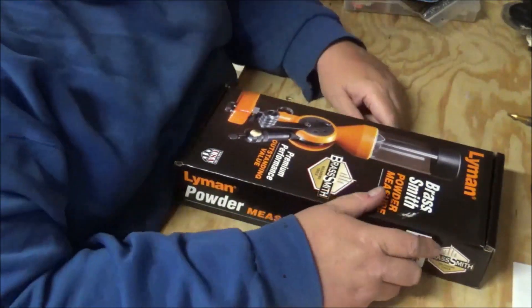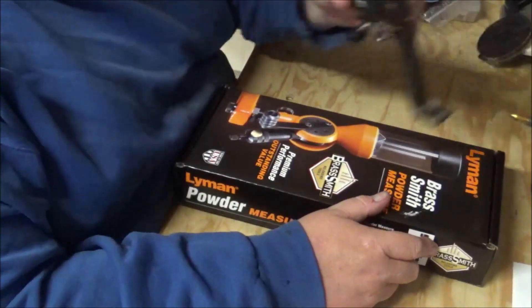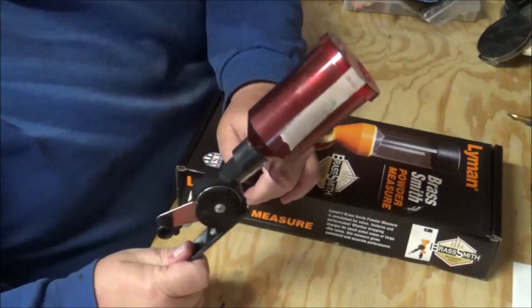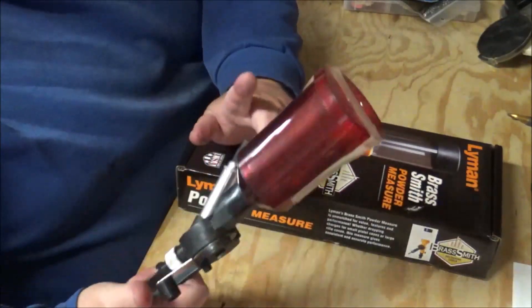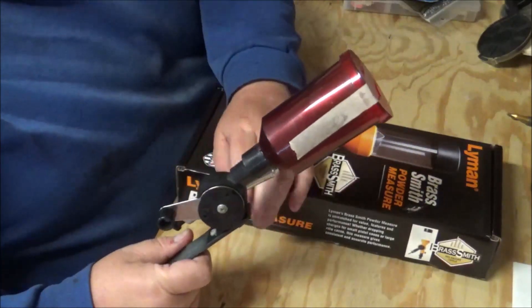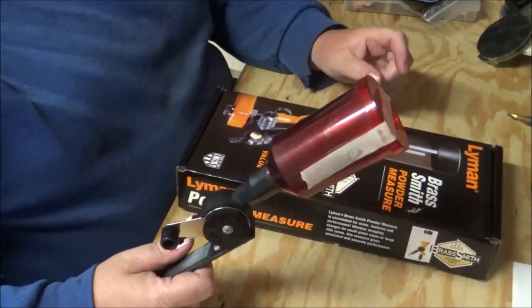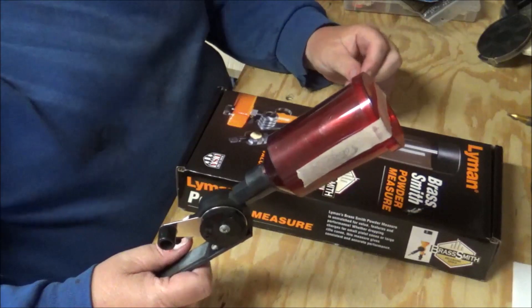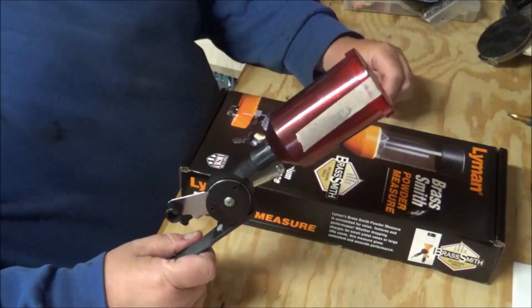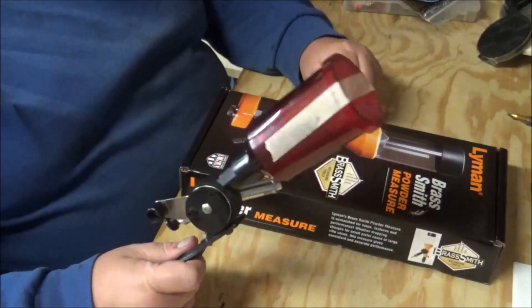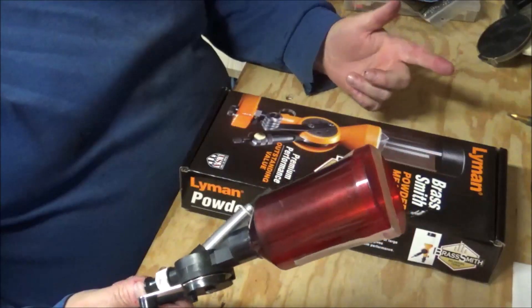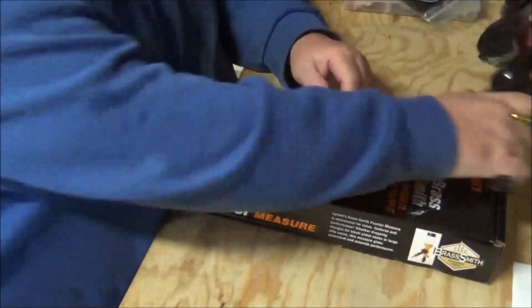Lee powder measure that I've been using for a long time for just about everything doesn't cut the stick powders real well because it's all plastic construction. Other than that, with the smaller ball powders and small flake powders like Accurate Number Two, which is a really small fine powder, or Nitro 100, which is a really fine powder, this measure still seems to work okay. Does get a little leakage but it's not too terribly bad, but